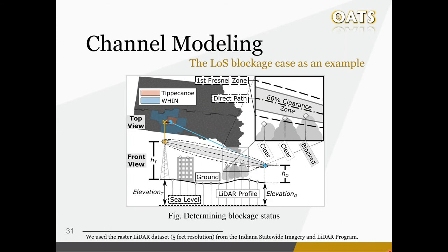We used two channel models — the line-of-sight blockage model and the NTIA IHATA model — in the simulator to determine first the blockage status and second the path loss value for the drone location. For both cases, a 2D terrain profile approach has been adopted. For a given pair of cellular tower and UAV locations with a given UAV height, we sample the LiDAR data along the direct path between the transmitter and receiver and try to find any samples in the 60% clearance zone. If any such sample is found, that link is marked as blocked. The LiDAR dataset was from the Indiana Statewide Imagery and LiDAR program, with a resolution of 5 feet, which is around 1.5 meters.